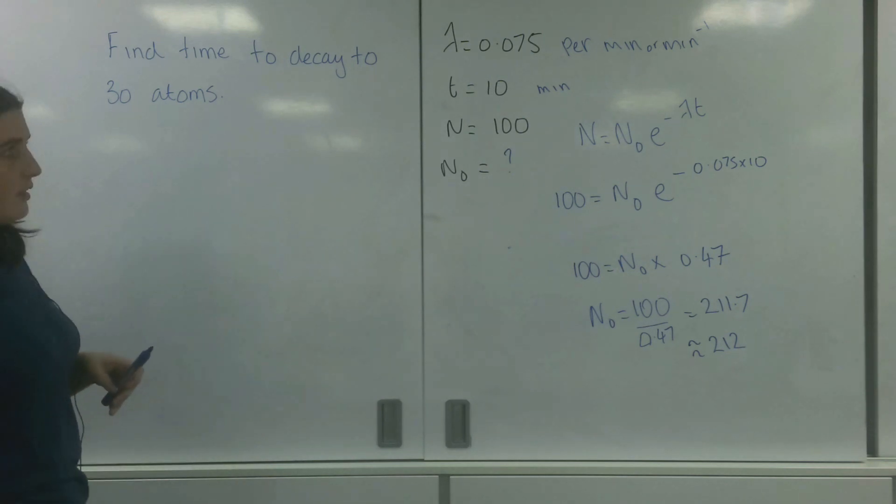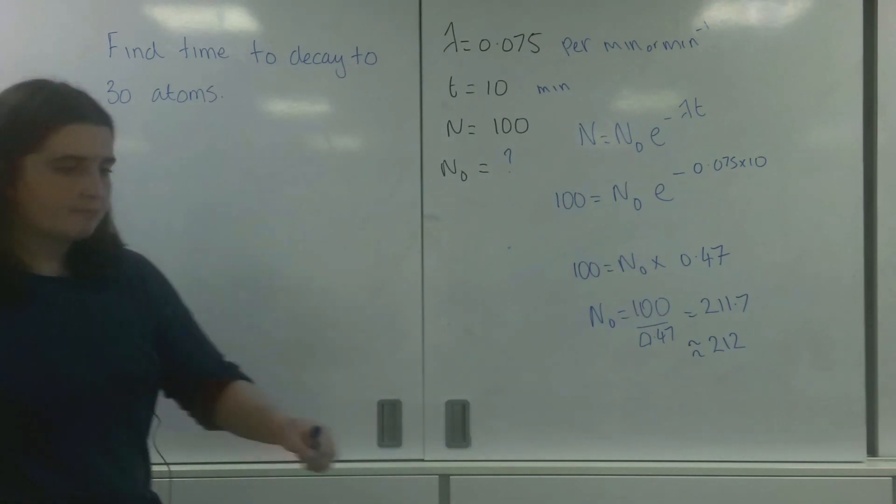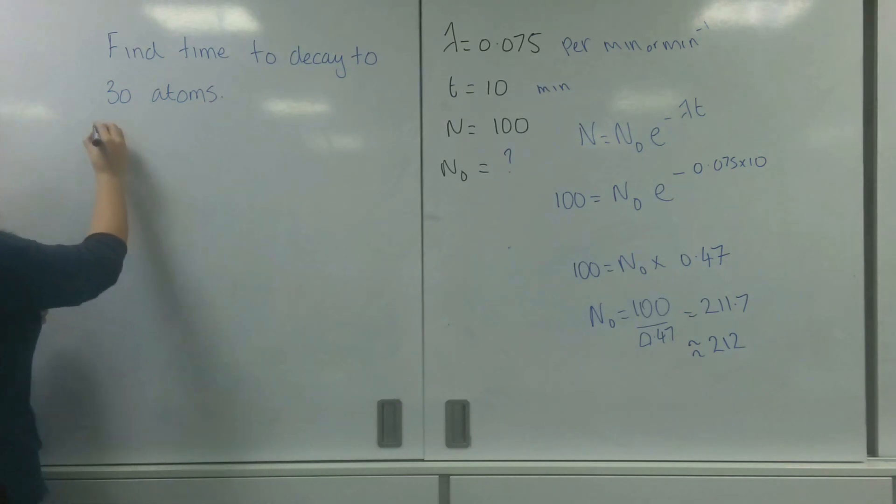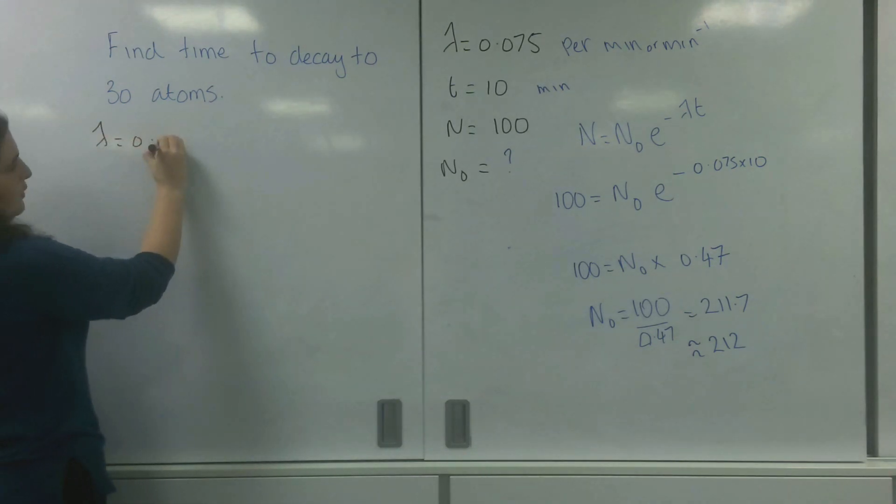So again, I'm going to write my information that I know down. So I know lambda is 0.075 per minute.